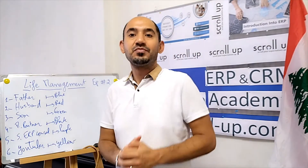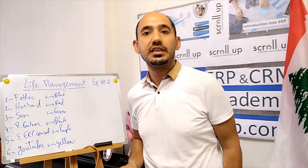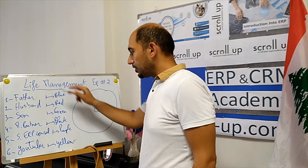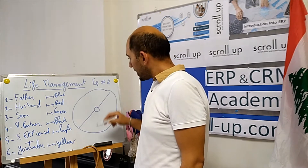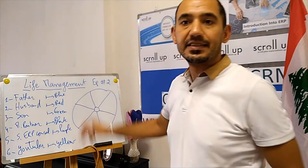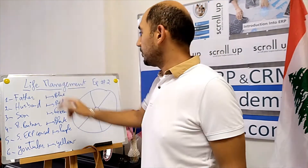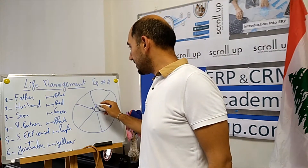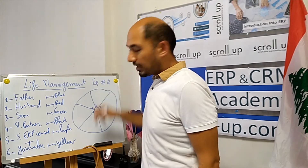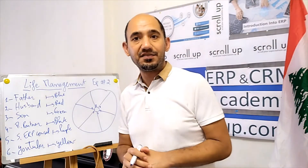After defining your roles, you need to create what we call a circle showing your rating for each role. I'm going to draw a quick circle here. Since I have six roles, I divide the circle into six parts — one section for each role: father, husband, son, partner, senior consultant, and YouTuber.